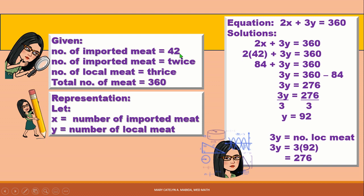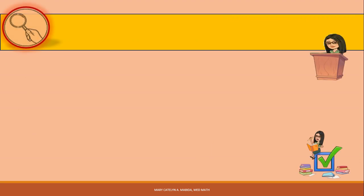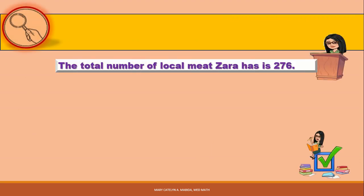We know the number of imported meat is 42, so we substitute that into X. So 2 times 42 is 84, plus 3Y equals 360. Then 3Y equals 360 minus 84. We divide both sides by 3, which gives us Y equals 92. Now 3Y is our number of local meat, so 3 times 92 equals 276. Therefore, the total number of local meat Sarah has is 276.